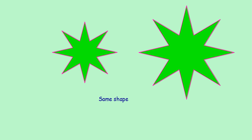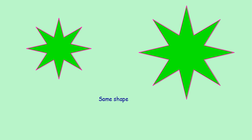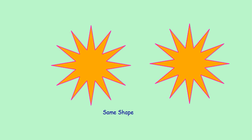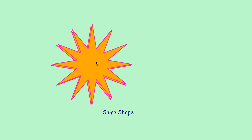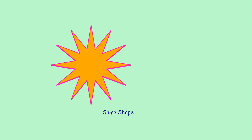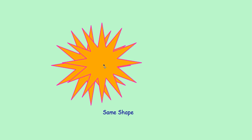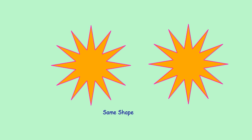Look at these two figures. What about its shape? It has the same shape. Then what about its size? Do they have the same size? No, it does not have the same size. Now look at these two figures. What about its shape? It has the same shape. Now look at its size. If you take this one and keep it on the first, it exactly coincides. That means these two figures have the same size too. So these two figures have the same shape and same size.